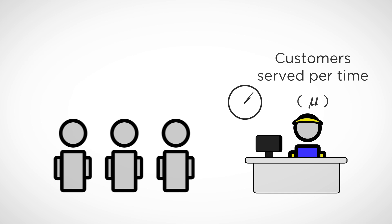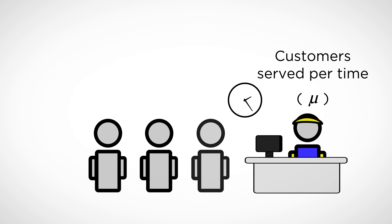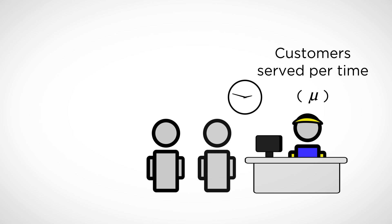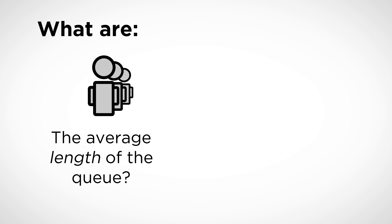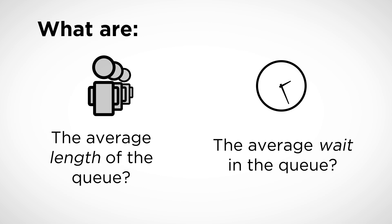Next, we define the average number of customers that the cashier can serve per unit time. This quantity is denoted by the Greek letter mu. Using a mathematical theory referred to as continuous time Markov chains, we can analyze the single server queue to determine the average number of customers that will be waiting in line and the average amount of time that a customer will have to wait in the line.